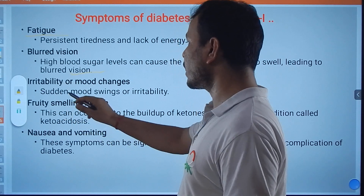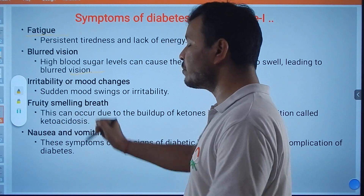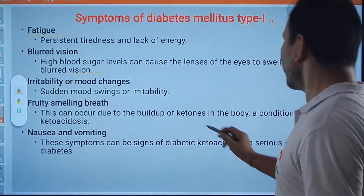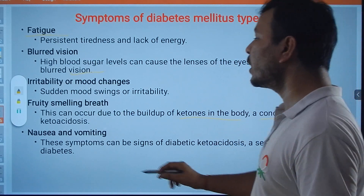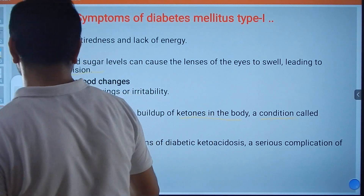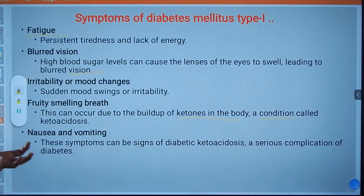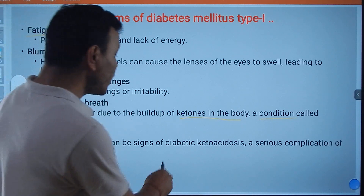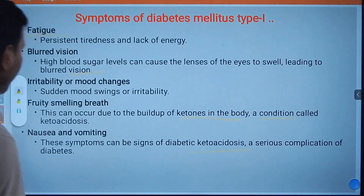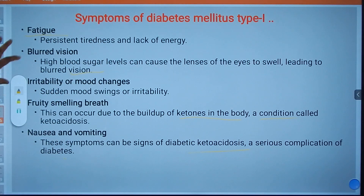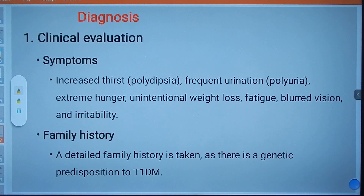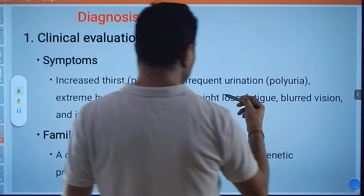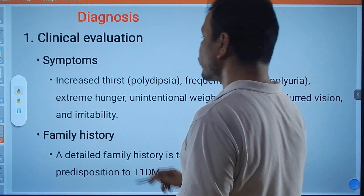Fruity smell in the breath is also a symptom, due to the production of ketones — a condition called ketoacidosis. Nausea and vomiting may also occur; these can be signs of diabetic ketoacidosis, a serious complication of diabetes. These are the symptoms of Type 1 Diabetes Mellitus. Clinically, it can be diagnosed by symptoms such as increased thirst, polydipsia, polyuria, and extreme hunger.